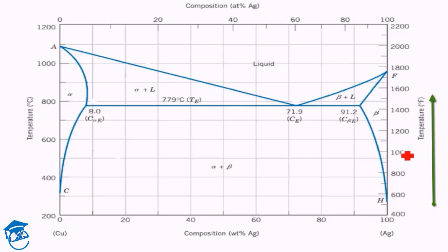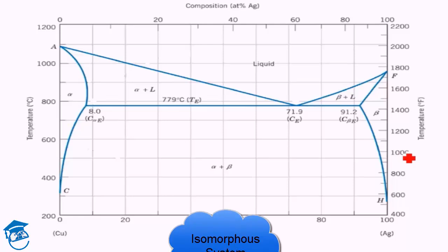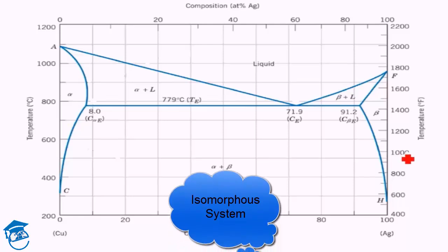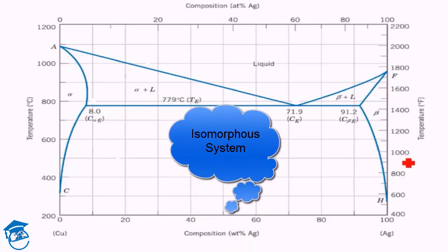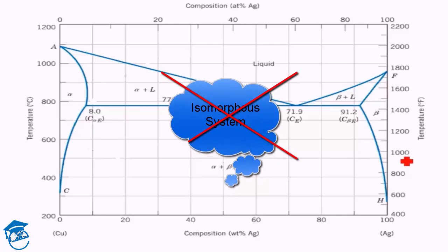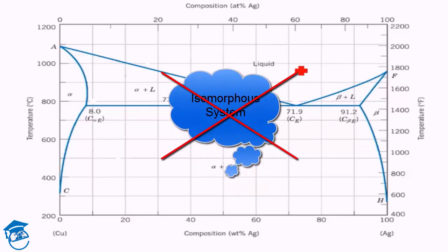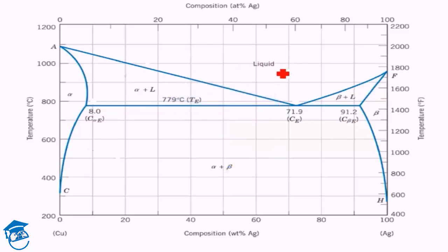There are certain differences here when compared to the isomorphous system. In the isomorphous system, you had complete solubility in both the liquid and solid phases. Here we don't have that. There is complete solubility in the liquid — the liquid exists as a single phase — but in the solid state we have two different phases coexisting. Complete solubility does not exist in the solid state, so this is not an isomorphous system.